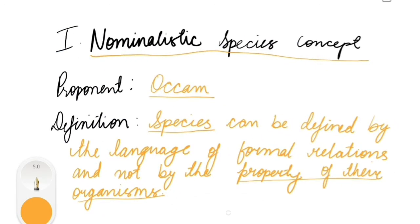The first concept is the nominalistic species concept, proposed by Okam. It defines species by the language of formal relations and not by the properties of organisms. Basically, species is only a name given to label a particular organism. According to this philosophical theory, species is not a real thing — it is a concept created by the human mind. Nature only produces individuals; species are a creation of man. This concept was once popular in France but is of little academic interest today.